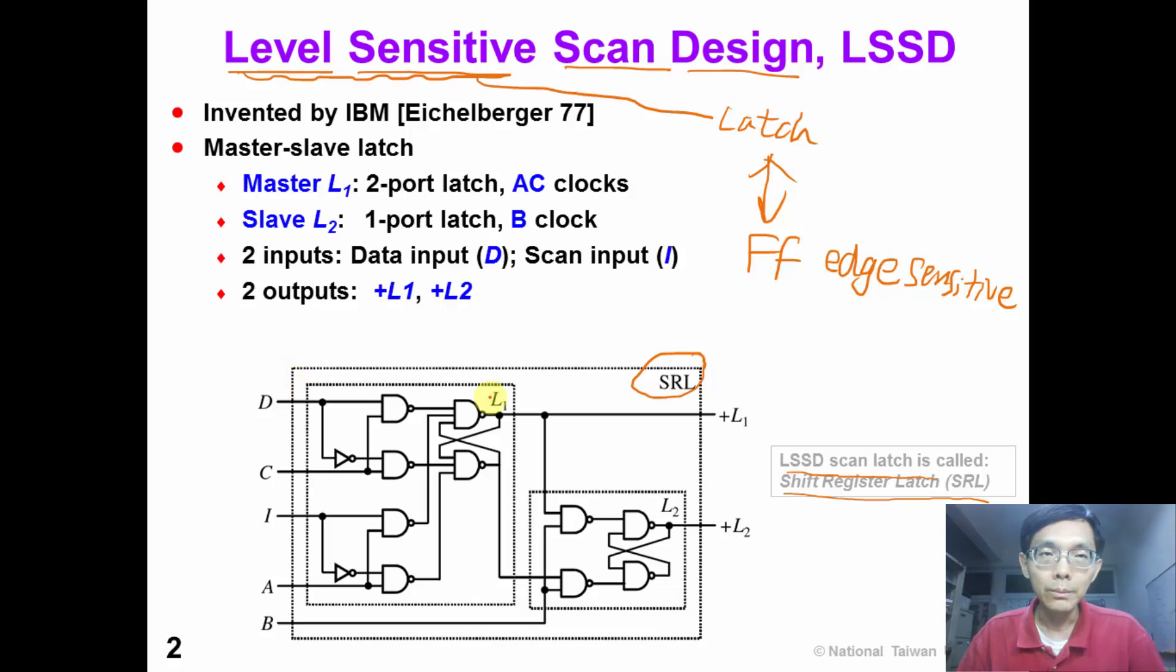In the level 1 master latch, it is a two-port latch, which has a data input and a scan input. The master latch is controlled by the C clock and the A clock. The level 2 slave latch is a one-port latch, which has one input port, and it is controlled by the B clock. The output of level 2 latch is plus L2.